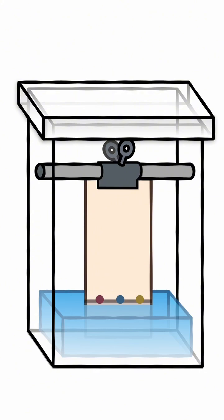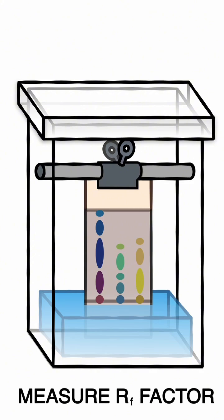As it travels up, the dyes separate. Once the separation is done, you would mark your solvent front and then measure what is called an RF value.